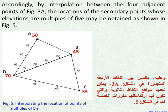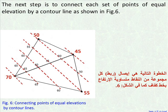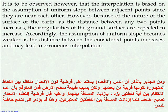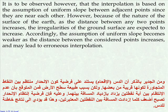Accordingly, by interpolation between the four adjacent points of figure 3a, the locations of the secondary points whose elevations are multiples of 5 may be obtained as shown in figure 5. The next step is to connect each set of points of equal elevation by a contour line, as shown in figure 6. It is to be observed, however, that the interpolation is based on the assumption of uniform slope between adjacent points since they are near each other.